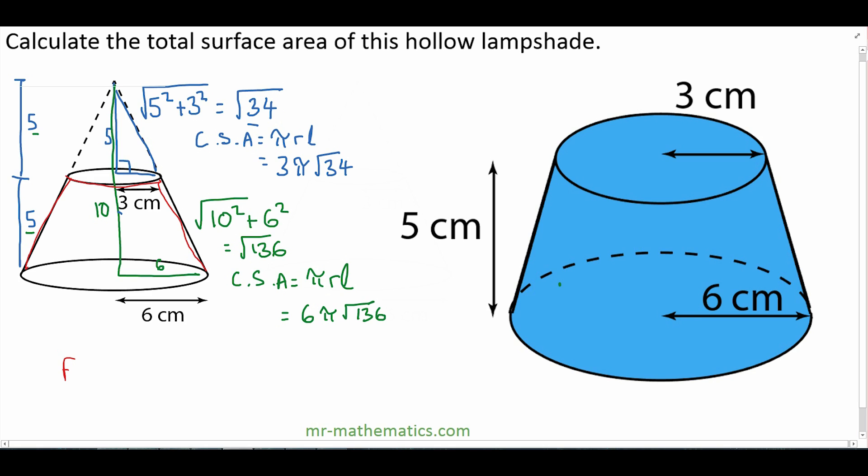So the difference between these two curved surface areas will give us the area of the frustum, or in this case the lampshade. And that will be 6π root of 136 minus 3π root of 34.